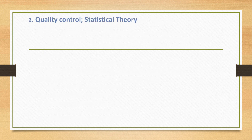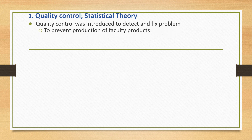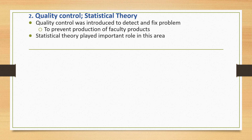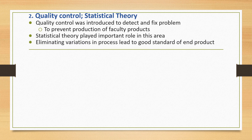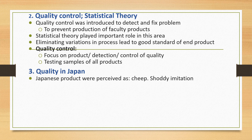Next is quality control, based on statistical theory. Quality control was first introduced to detect and fix problems and prevent the production of faulty products. Statistical theory played an important role in this area — eliminating variation in the process leads to higher-quality products. Quality control focuses on product detection and control of quality through testing samples of all products.